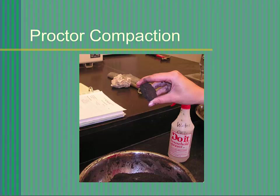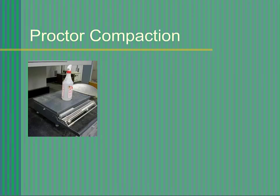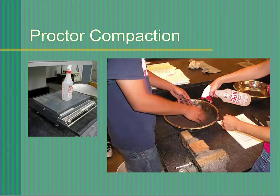The goal is to have data points distributed from well dry of optimum to wet of optimum, with one or two points close to optimum. The first sample we will prepare will be at optimum moisture content. We want to know how much water is added to bring the sample to optimum moisture content so we can prepare the other samples that are dry or wet of optimum. To do this, first fill your spray bottle with water, weigh it, and record the weight of the full bottle. Then weigh out five pounds of soil into a bowl and mix the water into the soil using the spray bottle until the sample appears to be at optimum moisture content. Then weigh the bottle and determine how much water was added to the sample.